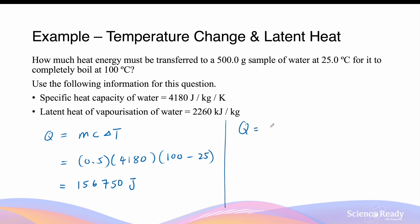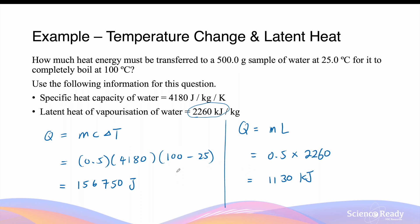We also need to calculate the heat required to vaporize the water sample, given by Q equals m times L. The mass is 0.5 kilograms and the latent heat of vaporization is 2260 kilojoules per kilogram. This gives a value of 1130 kilojoules. Keep in mind that the latent heat is given in kilojoules per kilogram, so the answer for this part is in kilojoules.